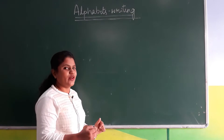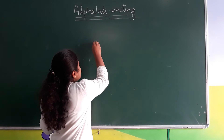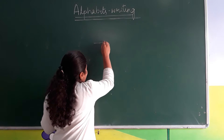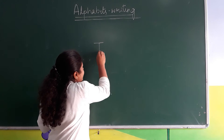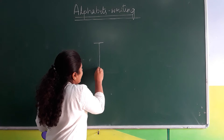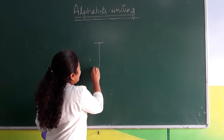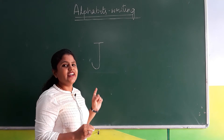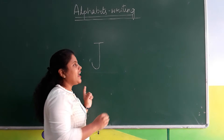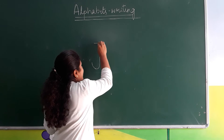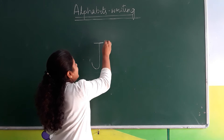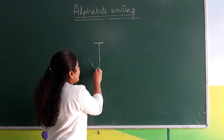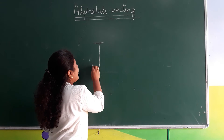Come, let's see how to write letter J. Sleeping line and cove. Which letter? J. Sleeping line and cove.